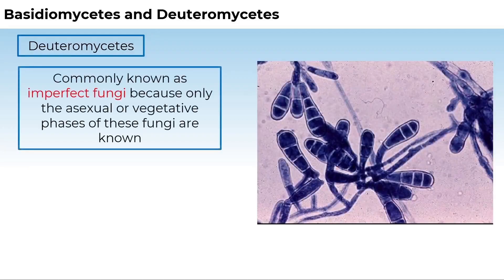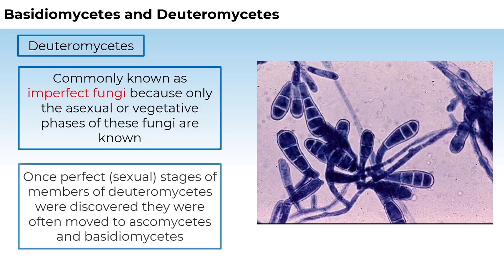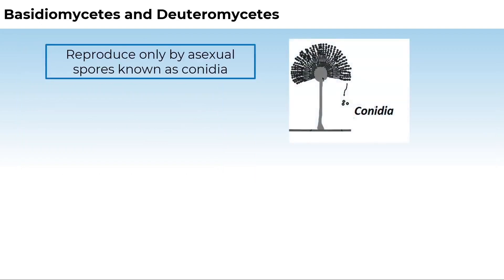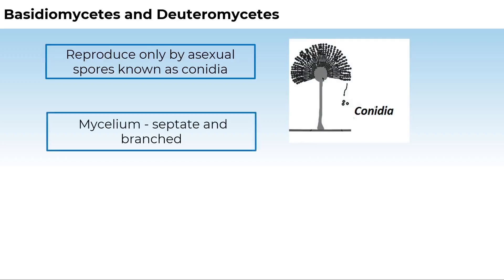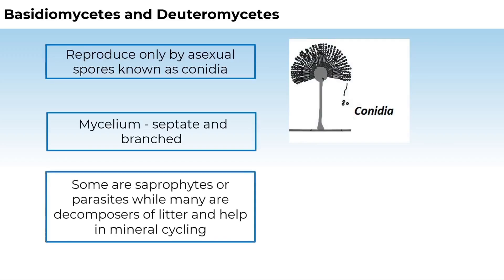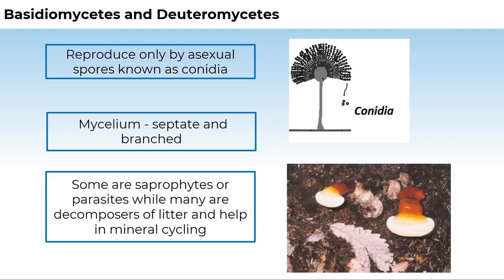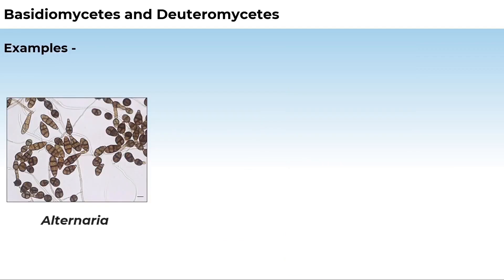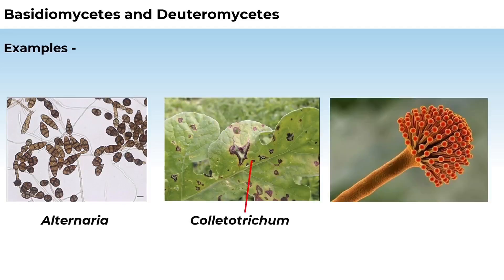Commonly known as imperfect fungi, Deuteromycetes are so called because only the asexual or vegetative phases are known. Once sexual stages were discovered, members were often moved to Ascomycetes or Basidiomycetes. Deuteromycetes reproduce only by asexual spores known as conidia. The mycelium is septate and branched. Some members are saprophytes or parasites, while a large number are decomposers of litter and help in mineral cycling. Examples are Alternaria, Colletotrichum, and Trichoderma.